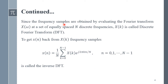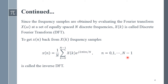Since the frequency samples are obtained by evaluating the Fourier transform X(omega) of x(n) at a set of equally spaced N discrete frequencies, X(k) is called the DFT — the Discrete Fourier Transform of x(n). To get x(n) back from X(k) frequency samples, we use the inverse formula: x(n) equals one divided by N, summation from k equals zero till N minus one of X(k) multiplied by e raised to power j two pi k n divided by N, where n varies from zero to N minus one. This is called the Inverse Discrete Fourier Transform.